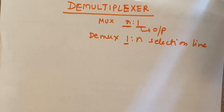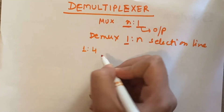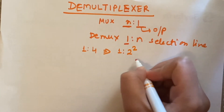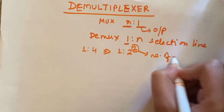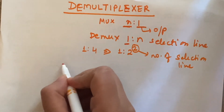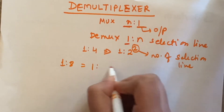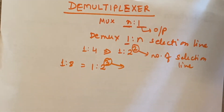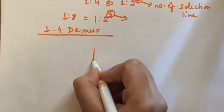To find the number of selection lines: for a 1-to-4 DEMUX we write it as 1-to-2² , so two will be the number of selection lines. Similarly, for a 1-to-8 DEMUX, it is 1-to-2³, so three will be the number of selection lines. Let's start with the 1-to-4 DEMUX.